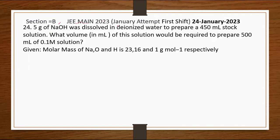Section B, JEE Mains 2023 January attempt first shift, 24 January 2023. Question 24: 5 grams of NaOH was dissolved in deionized water to prepare a 450 mL stock solution. What volume in mL of this solution would be required to prepare 500 mL of 0.1 molar solution?